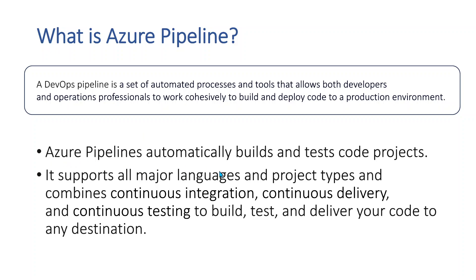Azure Pipelines automatically builds and tests code projects. Do not worry if this is confusing — we will see all these concepts in practical sessions in upcoming videos. For now, just focus on understanding the concepts. Azure Pipelines supports all major languages and project types, and combines Continuous Integration, Continuous Delivery, and Continuous Testing to build, test, and deliver your code to any destination. These three concepts are very important to understand how a pipeline works.